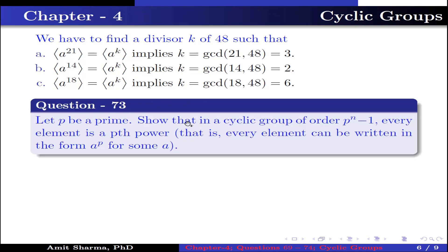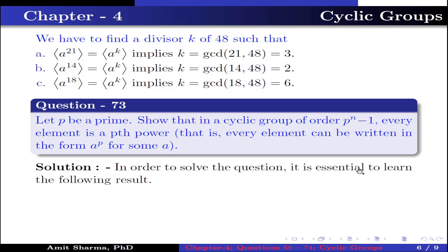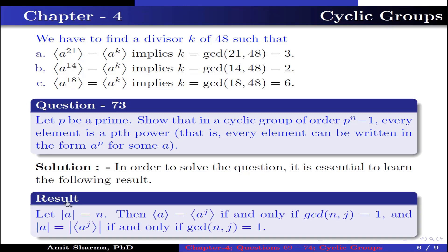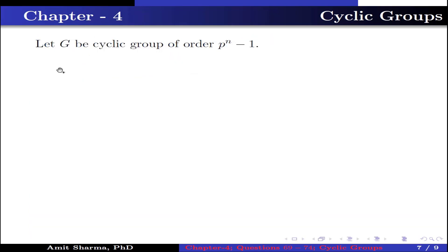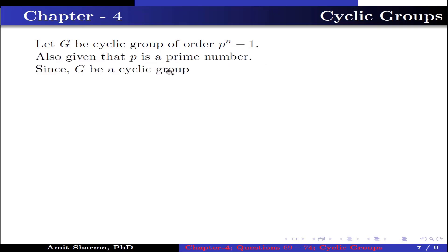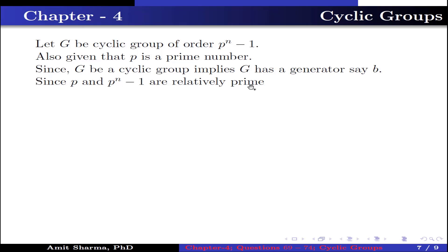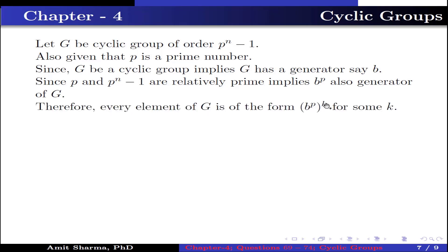Question number 73: let P be a prime; show that in a cyclic group of order P^n − 1, every element is the Pth power, that is every element can be written in the form A^P for some A. Key result: order of A is N, then group generated by A equals group generated by A^J if and only if gcd(N, J) = 1. Let G be a cyclic group of order P^n − 1 with P a prime number. Since G is cyclic, it has a generator, say B. Since P and P^n − 1 are relatively prime, B^P is also a generator of G. Therefore every element of G is of the form B^(PK) for some K, meaning every element is a Pth power.